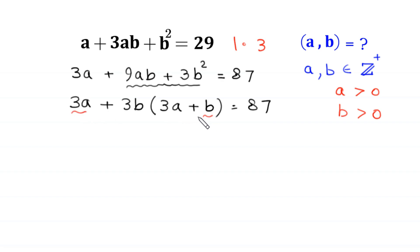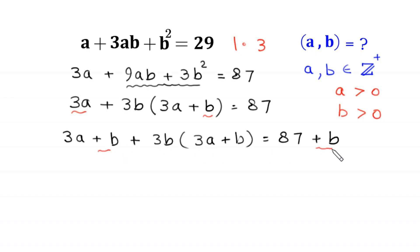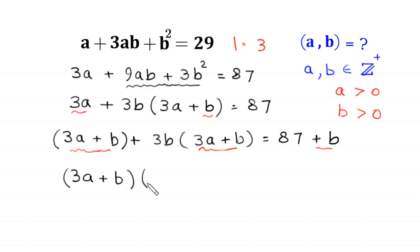Because we have 3a + b inside the parenthesis, we add b to both sides of this equation. This becomes 3a + b + 3b(3a + b) = 87 + b. We then use parentheses to group and factor out (3a + b) as a common factor, leaving (3a + b)(1 + 3b) = 87 + b.